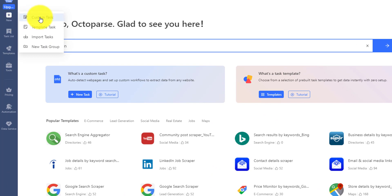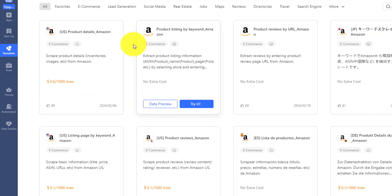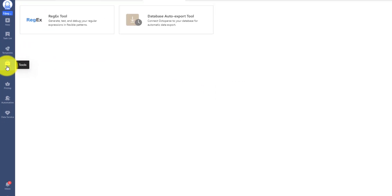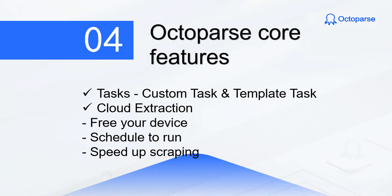The new button can help create a new task. Task list is where you can manage your tasks. In the template gallery, you can check all the templates we have published. We also have some tools here. Some other account settings can be found here. The most important features in Octoparse are tasks and cloud extraction. Tasks are the core for building a workflow. We have custom task and template task. There is another video explaining the details. You can check that later.